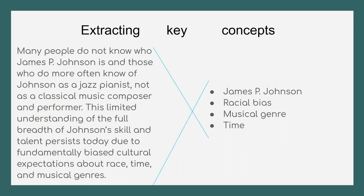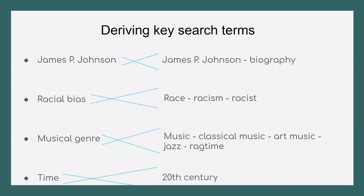Now let's focus this a little bit. It's time to take these broad concepts and break them out into a collection of very specific keywords and their synonyms — thinking about as many terms as we possibly can to say essentially the same thing. James P. Johnson is obviously a search term as well as a concept.